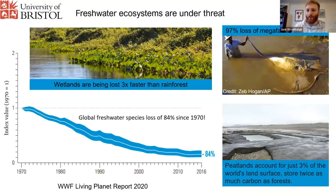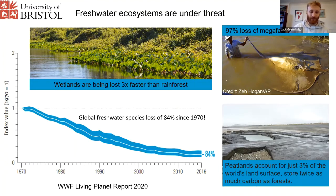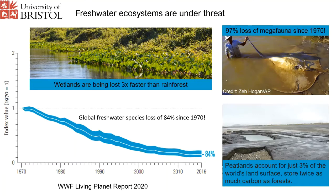We should establish that freshwater ecosystems are under threat, perhaps more so than any other ecosystem on the planet. Wetlands are being lost three times faster than rainforests are globally. We've actually lost 84% of freshwater species since 1970, which is just absolutely shocking. And 97% of freshwater megafauna, like this huge freshwater stingray here, have been lost in that same time period as well.